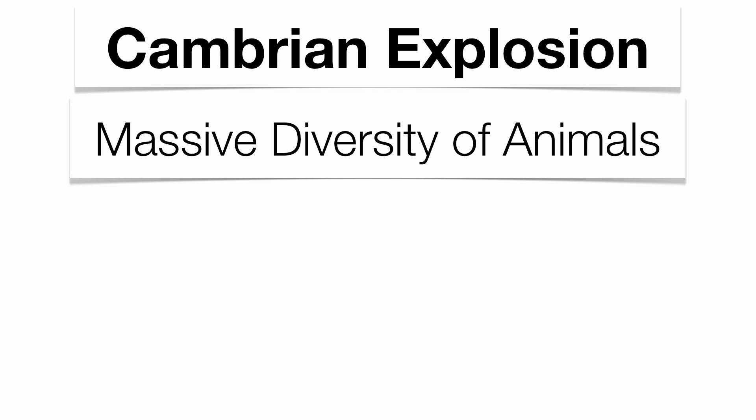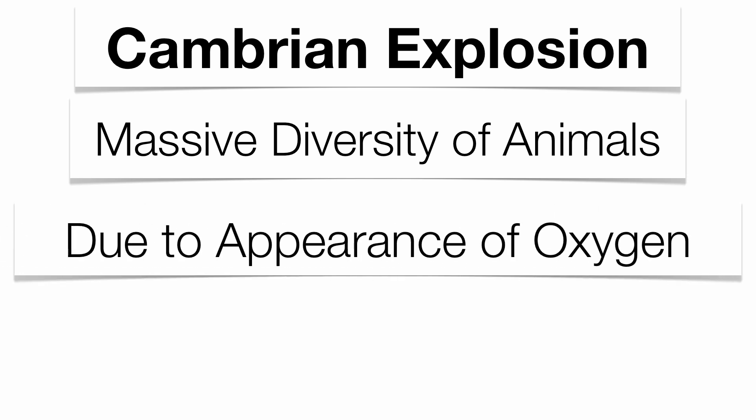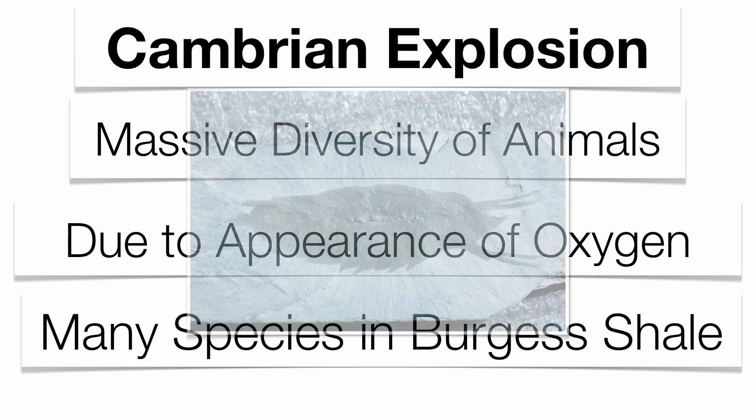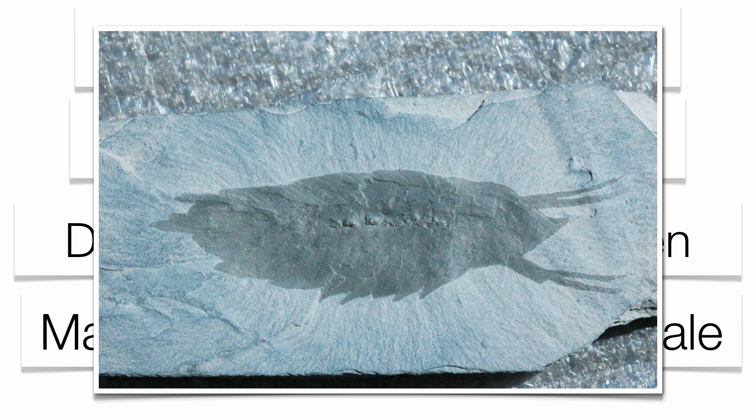All of this oxygen had to lead to something, and the big event scientists point to is what we call the Cambrian Explosion — a time period where a massive diversity of animals evolved on the planet. The Cambrian time period is the first period in the Paleozoic Era, driven by the massive abundance of oxygen in the atmosphere. The best fossil evidence of the Cambrian Explosion is found in the Burgess Shale, a type of shale found in British Columbia.